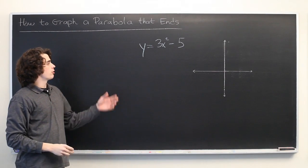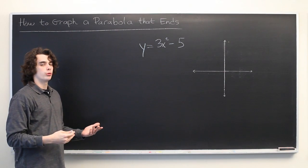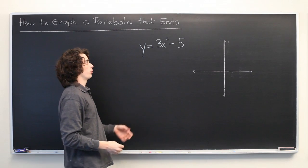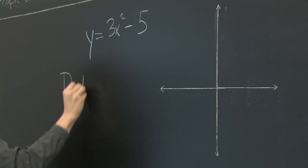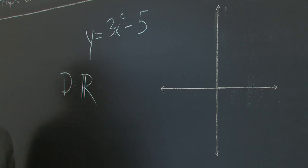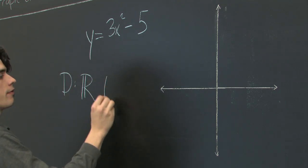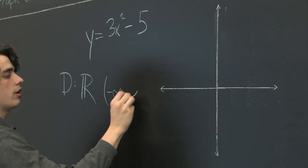Typically if you're asked to graph this, it is usually assumed that this will be defined on all real numbers. The domain is the set of all real numbers, or sometimes written negative infinity to infinity.